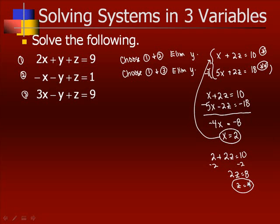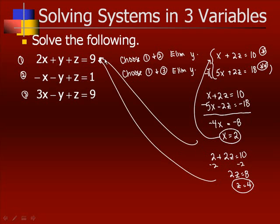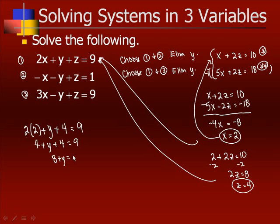We've got our x and our z — we just need to find y. So we go back into one of our original equations; it doesn't matter which one as long as there's a y in it. Going back to the first equation: 2 times x, but x was 2, plus y plus z, and z is 4, gives us 9. So 4 plus y plus 4 equals 9, meaning 8 plus y equals 9. Subtracting 8, we get y equals 1. So our proposed solution is x equals 2, y equals 1, and z equals 4. Now we check: 2 times 2 is 4, plus 1 is 5, plus 4 is 9. It works.